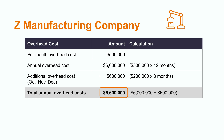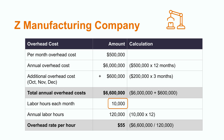Assume that the overhead costs are allocated to products using labor hours. Labor hours are 10,000 hours each month. Therefore, for the year, there are expected to be 120,000 labor hours, which comes from multiplying 10,000 hours per month by 12 months. Under the normal costing method, the company applies the manufacturing overhead to products at the rate of $55 per hour, which is $6,600,000 divided by 120,000 hours throughout the year.